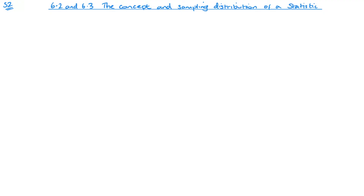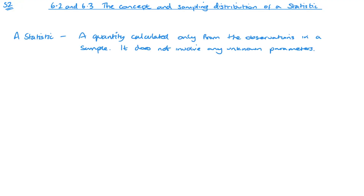To confirm: a statistic is calculated only from the observations in a sample and it does not have any unknown parameters. The second thing we're looking at is a sampling distribution of a statistic. If we repeatedly take samples from a population and calculate the same statistic each time, the statistic will have its own distribution, and this is called the sampling distribution.